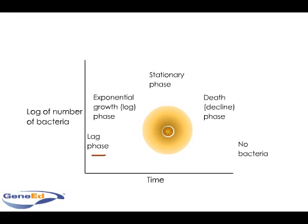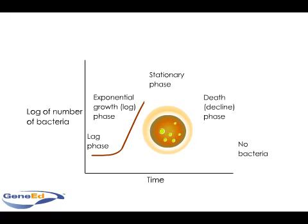bacteria are producing whatever proteins are necessary to live within the new environment. Replication starts and rapidly continues during the second phase, termed the log or logarithmic or exponential phase. Bacterial cells undergo binary fission at a constant rate, and thus the number of bacteria increases logarithmically.